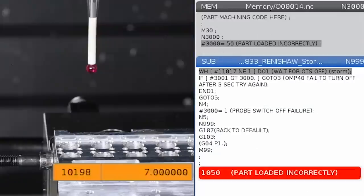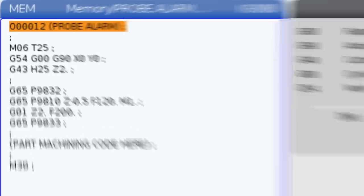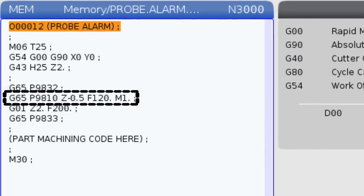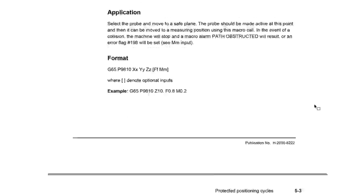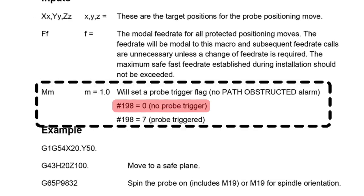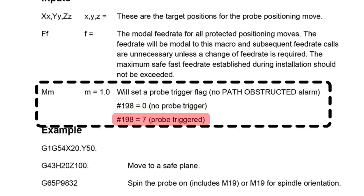Variable 198 is typically used on the classic control. And on the next-gen control, we'd use variable 10,000 198. They're kind of synonymous. We don't directly set variable 198 to a zero or a seven in our program. It happens automatically when the P9810 Renishaw macro is called with an M1.0 on the line. Now you can download the Inspection Plus manual from the Haas website and check it out for yourself. Zero means no probe triggered and a seven means probe triggered. That's just the way Renishaw set it up to help us out.